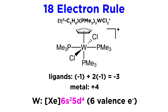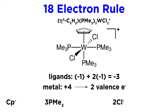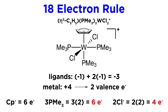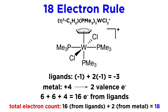Tungsten has an electron configuration ending in 6s2 5d4, so it has six valence electrons. Losing four electrons therefore leaves us with only two. The cyclopentadienyl anion donates three pairs of electrons, so it donates six electrons total — this one is very important to remember. The phosphines and chlorides donate two electrons each. So that's six plus six plus four, for a total of sixteen electrons from the ligands. Add the two from the metal atom and we get eighteen, so this complex satisfies the eighteen electron rule and should be quite stable.